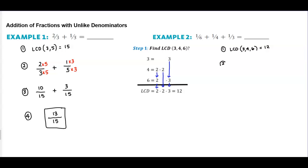Step number two. We're going to write down each fraction as it is with a little space: one-sixth plus one-fourth plus one-third. Now we need to find equivalent fractions that have a common denominator of 12.